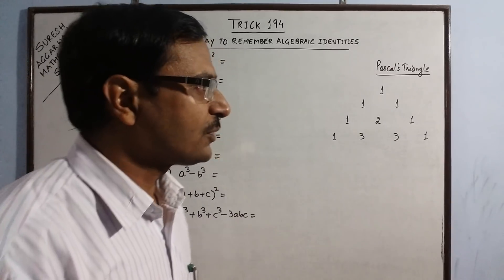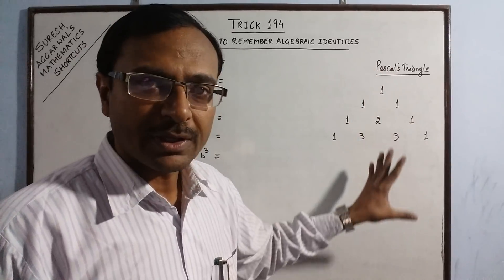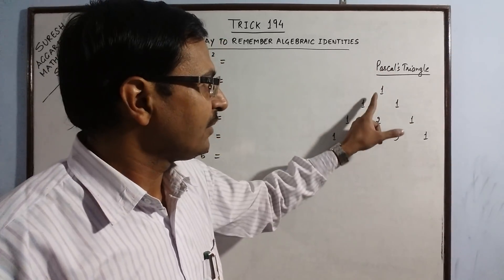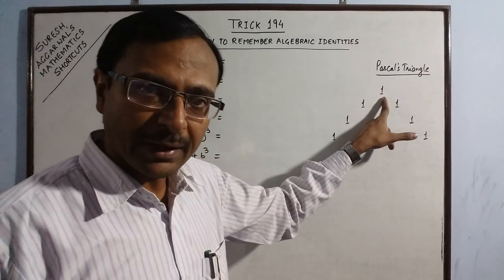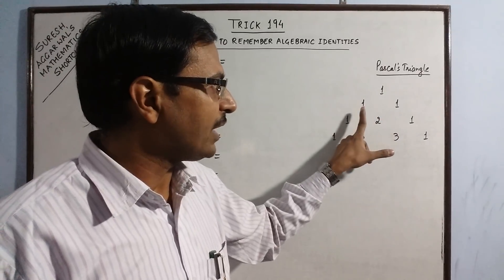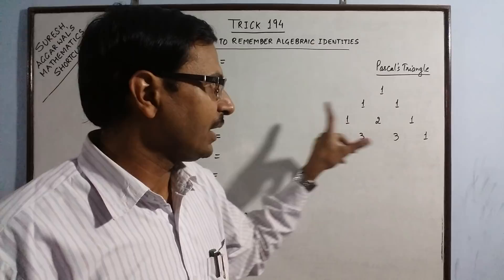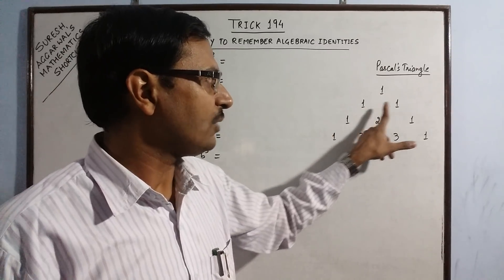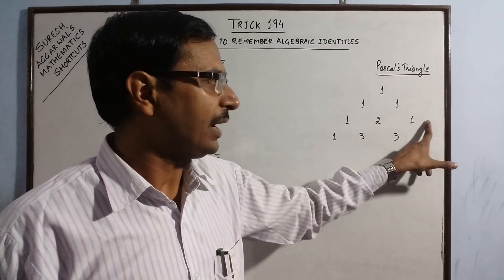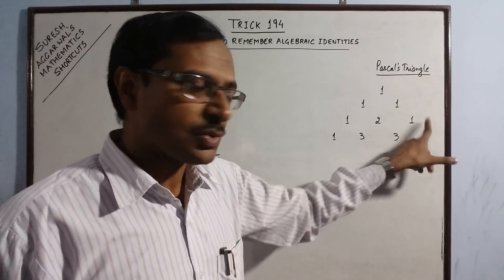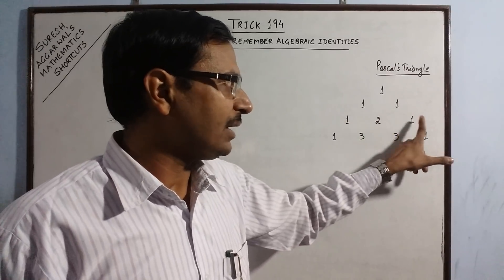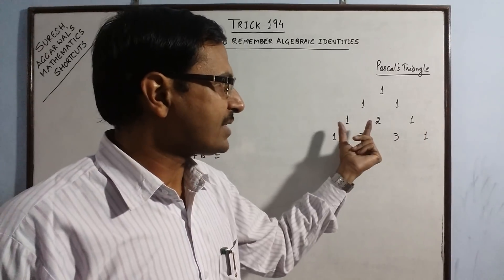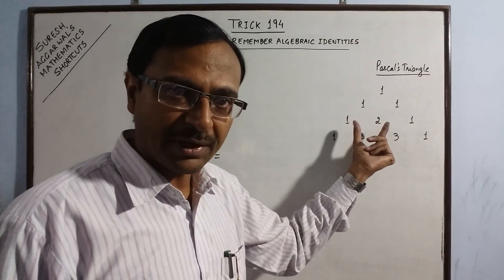For this we need to know a very important concept of Pascal's Triangle. In the first row we have a single one, in the second row we have a pair of ones, in the third row we start with one, then add 1 plus 1 to get 2, and the end is always with 1. In the beginning and at the end you will have 1, and in between you have the sum of the two numbers above it.